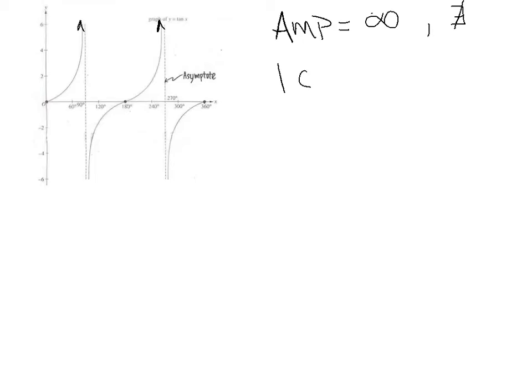How long does it take to complete one cycle? If you start at 90° and follow the curve all the way to 270°, that's one cycle. That's 180 degrees for one cycle, or in radians, π radians to complete one cycle. So the period of the tangent function is π.